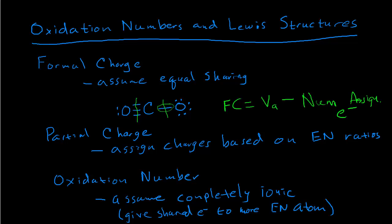For this oxygen in CO₂, we count the electrons around it after equally splitting the shared pairs. Counting up, we get seven electrons assigned to this oxygen. So the formal charge on this oxygen is its normal valence — six — minus seven, which gives negative one. So this oxygen has a minus one formal charge when we assume equal sharing.